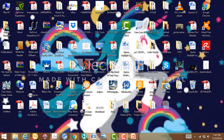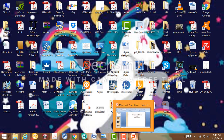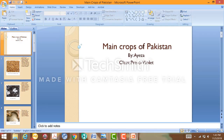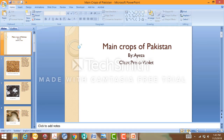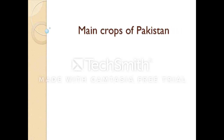I made a publication so you can understand it and I can explain it. So let's begin. Here is the publication. The topic, as you all know by now, is the main crops of Pakistan, by Isa — that's me — Class P.O., Woyland.